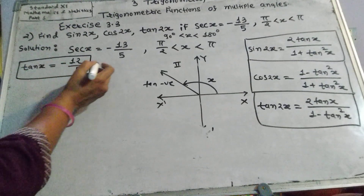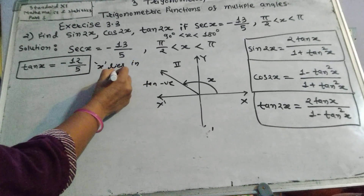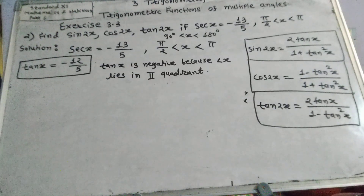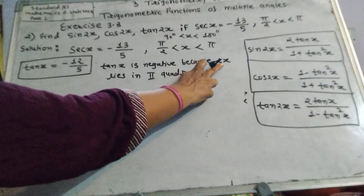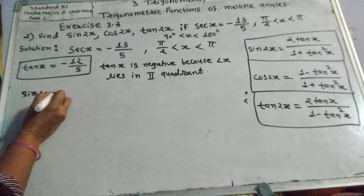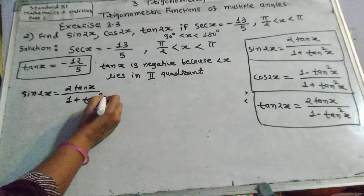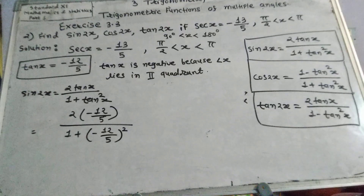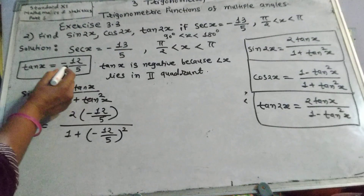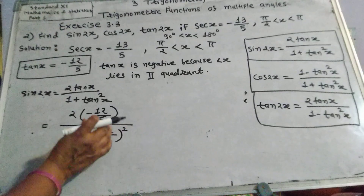We take the negative sign here because angle x lies in the second quadrant, and tan x is negative in the second quadrant. Now for sin 2x: sin 2x equals 2 tan x divided by 1 plus tan²x. Putting in the value of tan x, sin 2x equals 2 times negative 12 upon 5, divided by 1 plus negative 12 upon 5 squared.